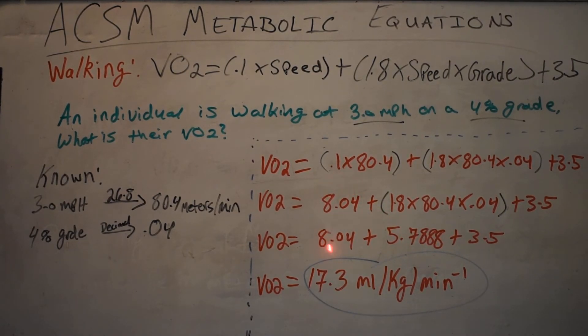Don't do anything else. Now again, just rewrite your equation. VO2 equals 8.04 plus 5.788 plus 3.5.